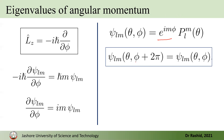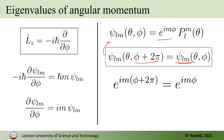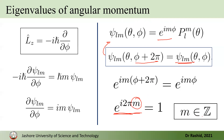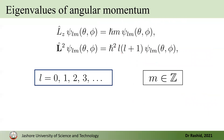Now, rotating around the z-axis by 2π must return the function to the same value. So e^(im(φ+2π)) = e^(imφ), which means e^(2πim) = 1. For the left-hand side to equal one, m must be an integer. We conclude that m is a real integer: m ∈ ℤ, i.e., m = 0, ±1, ±2, …